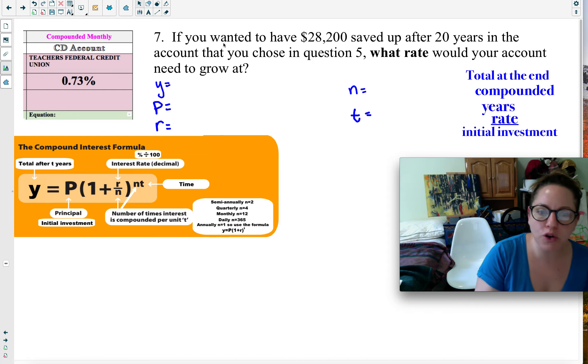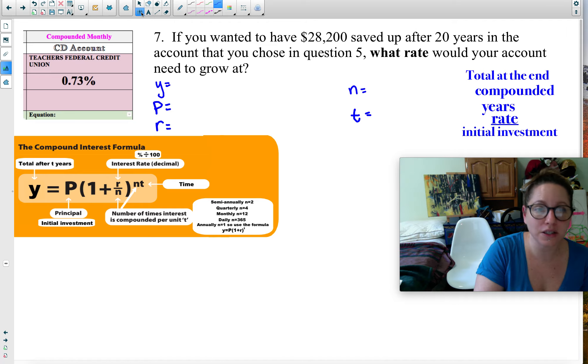If I wanted my goal to have $28,200 after 20 years in the account that I chose in question five, in my case I chose my CD account because I really like that one. I like that it had a higher rate, even though I couldn't touch the money for a while. So what rate would my account need to grow at? I want to find one that has a different rate because I don't know the rate, and my goal is to have my money grow to $28,200. That's what I want to have at the end after 20 years.